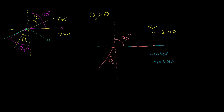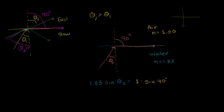So we'll break out Snell's law. We have the index of refraction of the water, 1.33, times the sine of our critical angle equals the index of refraction of air, which is 1, times the sine of the refraction angle — the sine of 90 degrees. Now what is the sine of 90 degrees? You have to think about the unit circle. If you go 90 degrees on the unit circle, the sine is the y-coordinate, which is 1. So the right-hand side simplifies to 1.